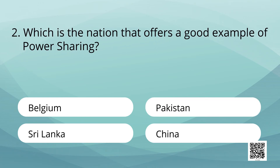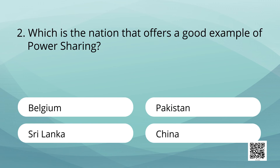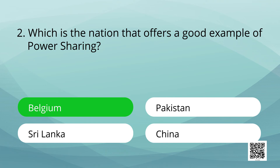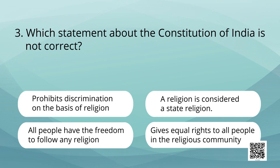Which is the nation that offers a good example of power sharing? Options are: Belgium, Pakistan, Sri Lanka, China. Answer is Belgium.